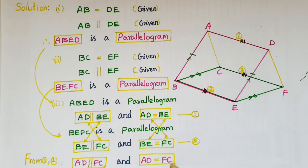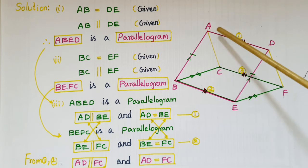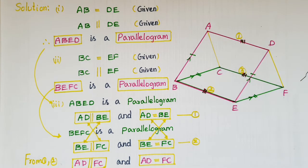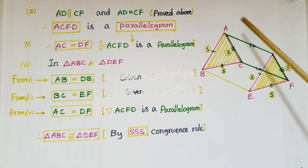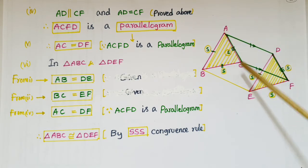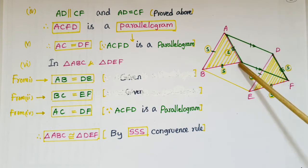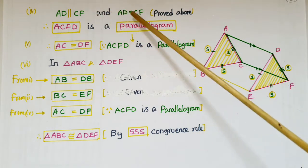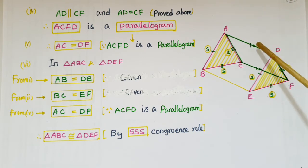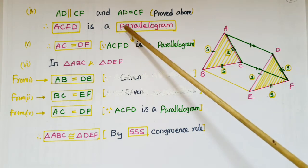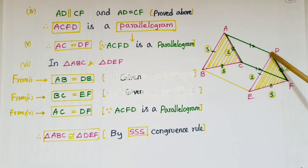From these two results: AD is parallel to BE and BE is parallel to FC, so AD is parallel to FC. Also, AD is equal to BE and BE is equal to FC, so AD is equal to FC. Therefore AD is parallel to FC and AD is equal to FC. In the fourth question, we have to prove that ACFD is a parallelogram, and so ACFD is a parallelogram.